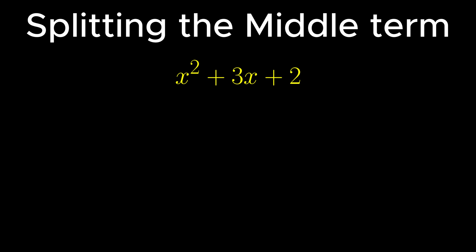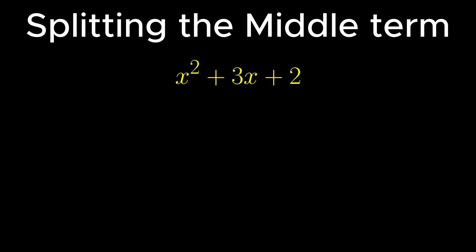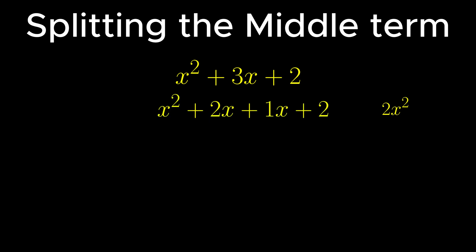This method works for factorizing quadratic expressions. To split the middle term, the given expression should be represented in decreasing order of the variable's degree. Since x squared plus 3x plus 2 is already in decreasing order, there is no need to rearrange the terms. The next step is to multiply the first and the third term of the given expression, that is x squared into 2, which gives 2x squared. Using the term 2x squared, the middle term is rewritten as the sum of two terms. By critical thinking, 3x can be rewritten as 2x plus 1x. Thus the expression becomes x squared plus 2x plus 1x plus 2.